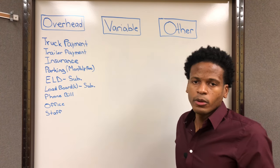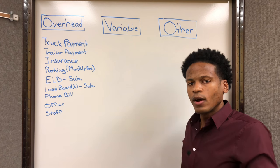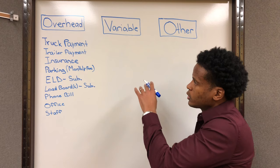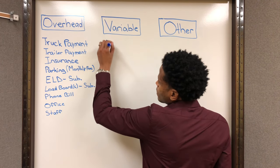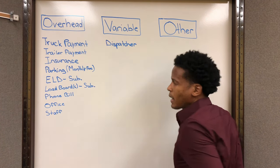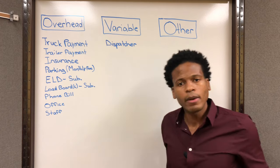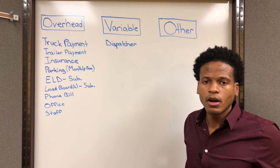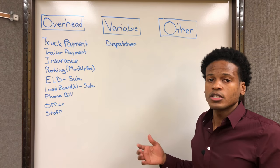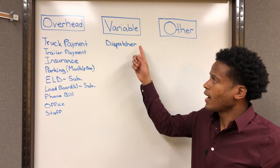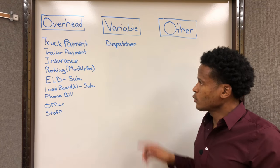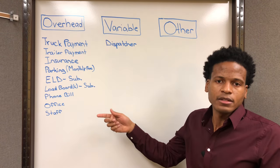So now let's talk about some of the variable expenses — these are the expenses that are going to go up and down depending on how hard the truck runs. The first variable expense is a dispatcher. You may or may not be using a dispatcher; you may be booking all your loads yourself. But if you're using a dispatcher, typically they get a percentage of the load, so the more loads you move, the higher that dispatching amount will be for that month. If you don't run any loads, there won't be any dispatching fees that month.